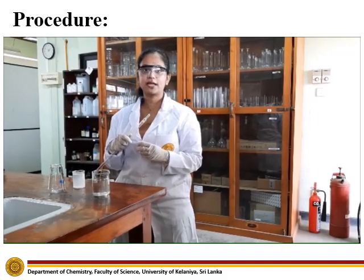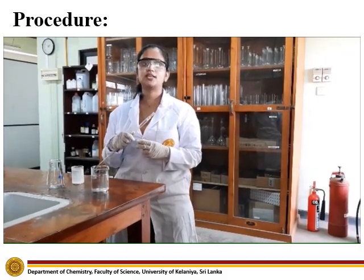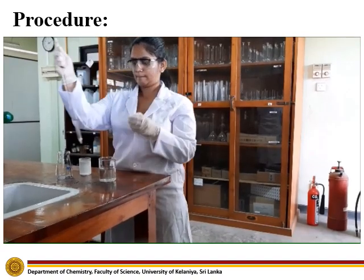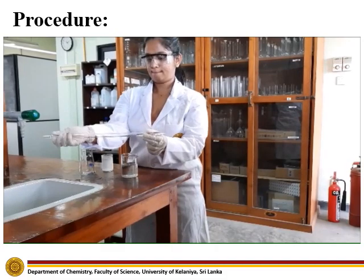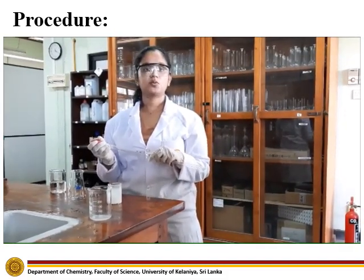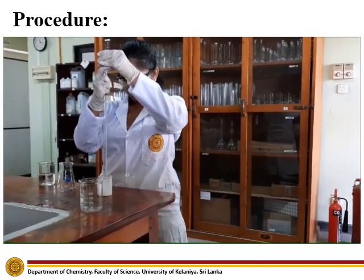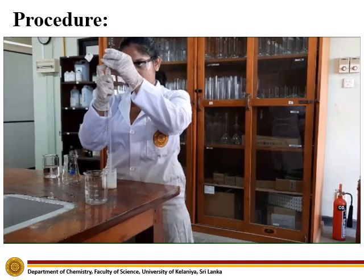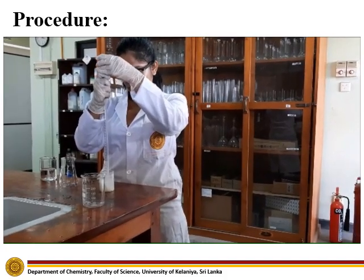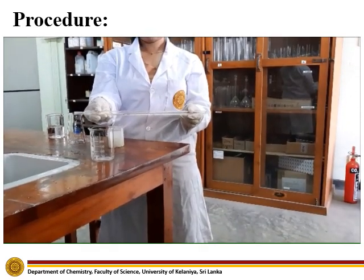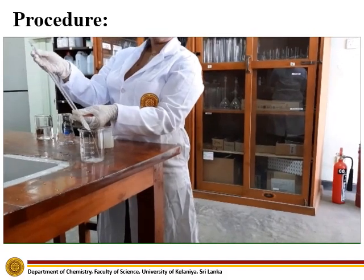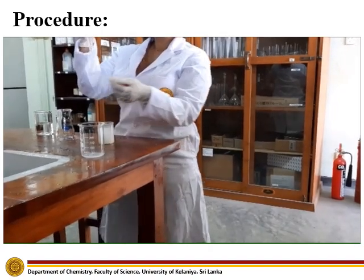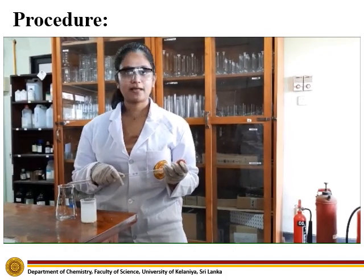Now let's wash the pipette using distilled water prior to measuring 25 milliliters of calcium hydroxide. Now let's also wash the pipette using the prepared calcium hydroxide solution. Now let's measure 25 milliliters of calcium hydroxide solution.